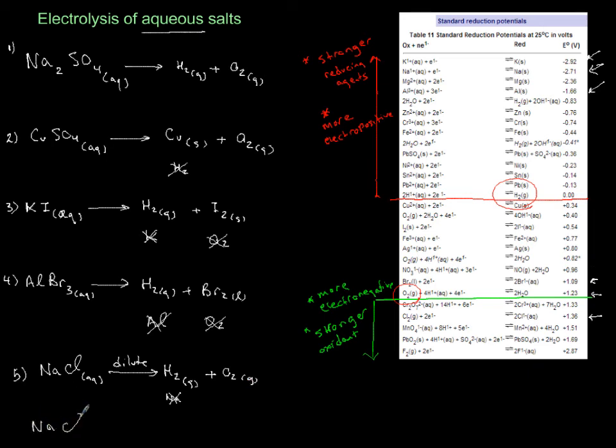Now if you change the solution into concentrated, usually known as brine in industrial electrolysis, so if this is concentrated, hydrogen still comes out in one electrode.